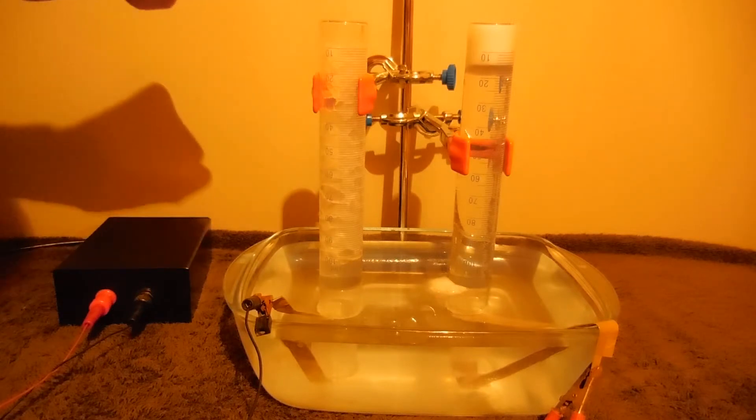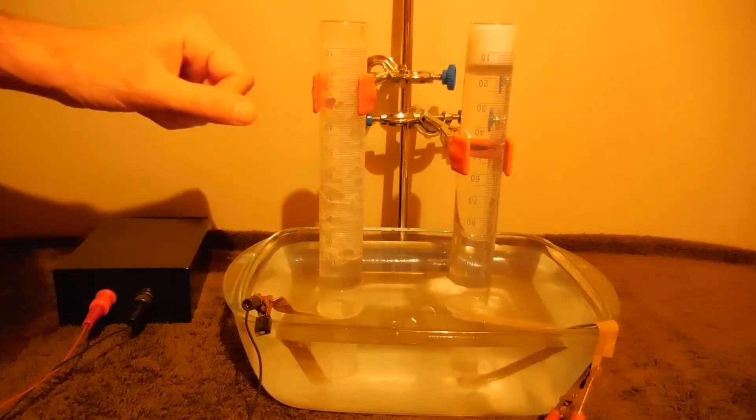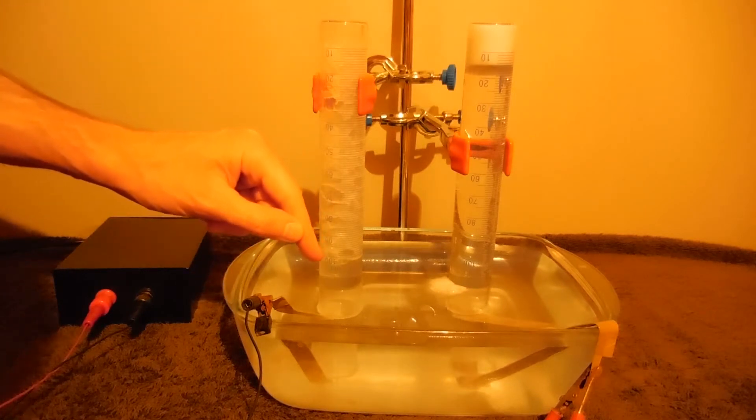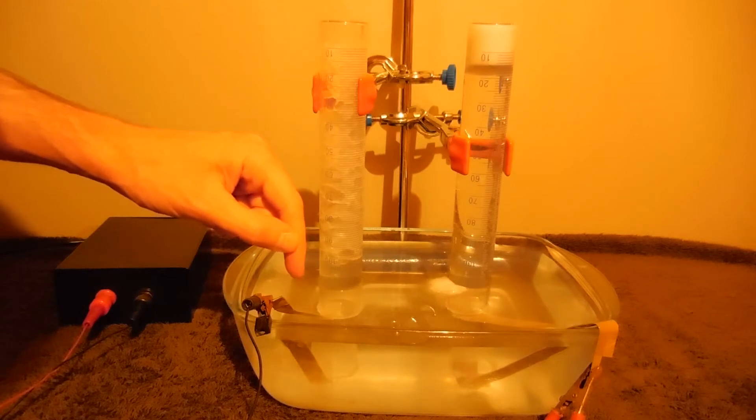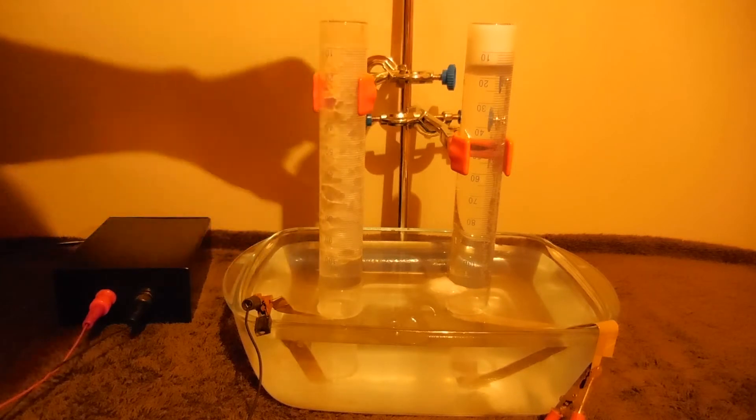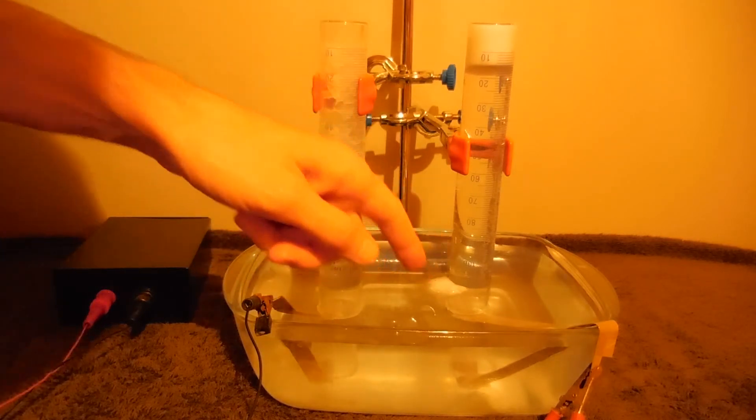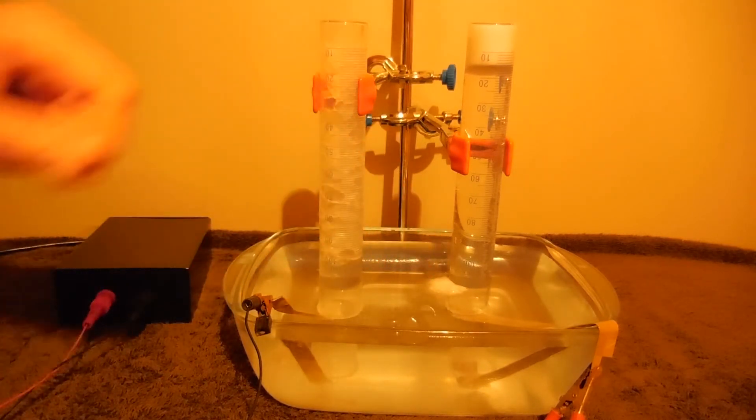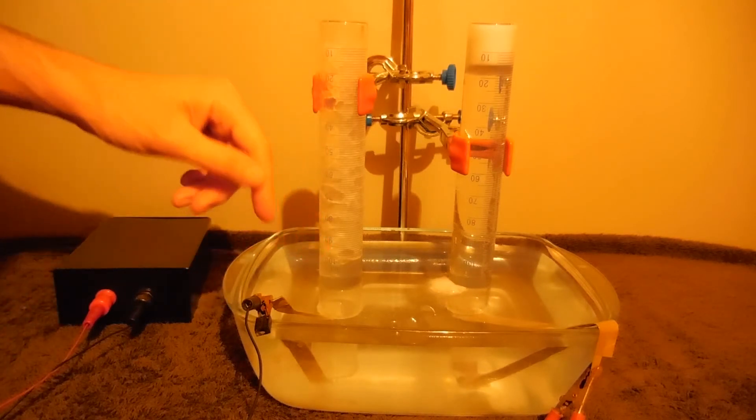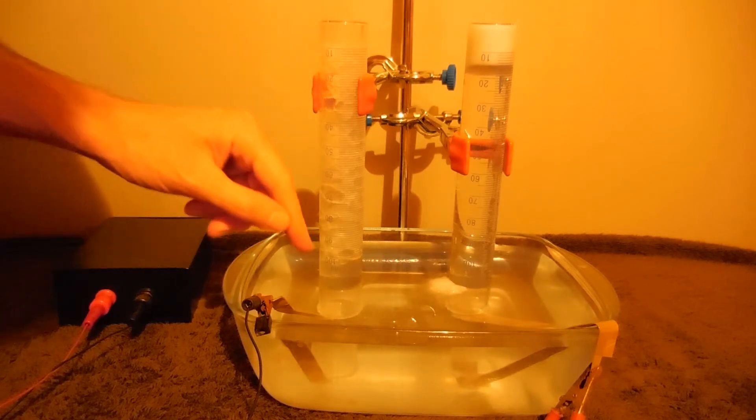After 93 minutes, as you can see, 100 milliliters of hydrogen has been produced at the negative electrode and 13-14 milliliters of oxygen from the positive electrode. There is a large amount of foam which is making reading harder.